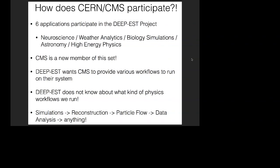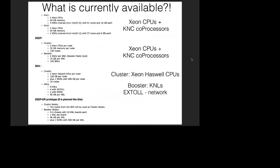They're building the system without knowledge of what kind of physics workflows we'll run — we provide the requirements of our applications, and that's it. On page six you can find a summary of what hardware is currently available: for the most part either processors or co-processors, and no other accelerators like GPUs or FPGAs at this point yet, which have been declared in the proposal. In the future they will have more, but we can use what they have already for various purposes.